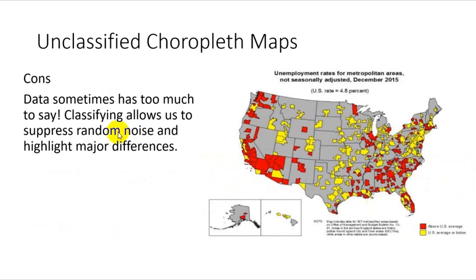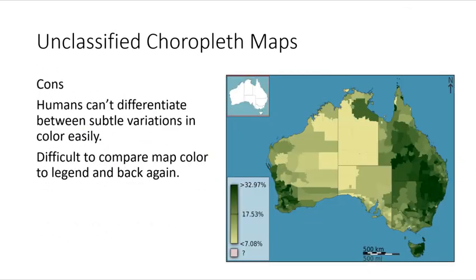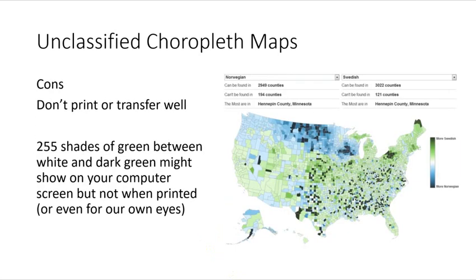Some cons of unclassified choropleth maps: often the data has too much to say, and classifying lets us simplify and get rid of some noise. When you want to simplify the message, classifying is a good idea rather than using a stretched color ramp. It's also very hard for humans to differentiate between subtle variations in color, so the cognitive load is much higher. And they don't print or transfer well — you lose the fidelity of the colors. It might be easy to read on screen, but when you print it, you lose all that detail in the graduation between, say, white and dark green.